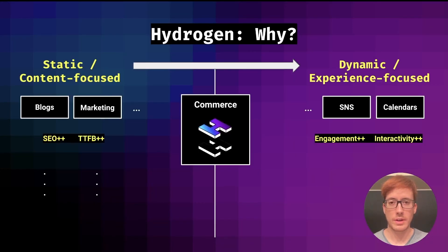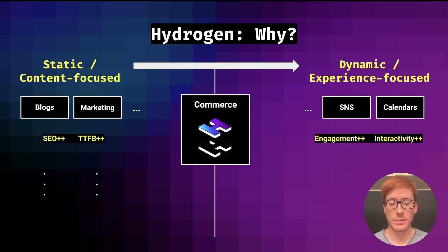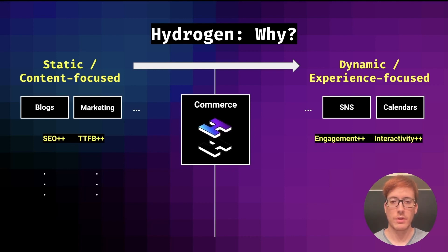There are many frameworks already out there, so why did we create our own? Hydrogen is a web framework tailored for online commerce. Online commerce is quite challenging — it's right in the middle of two sides of web development. On one side we have static pages that need to prioritize SEO ranking and performance, such as blogs or marketing pages, while on the other side we have dynamic web pages that require engagement and interactivity, like a social network dashboard or a calendar web application. Commerce is right in the middle: it needs to be performant and rank high in SEO, but we cannot give up on interactivity either. Instead of using a general purpose framework, we created our own that is tailored for online commerce specifically.